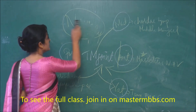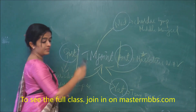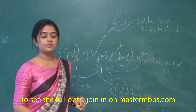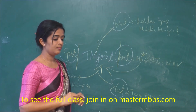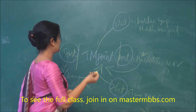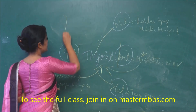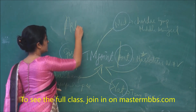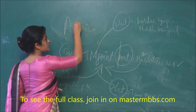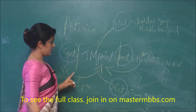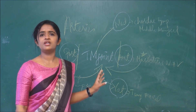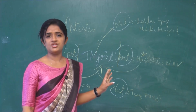Now, regarding the blood supply — the blood supply of the temporomandibular joint — the arteries supplying the temporomandibular joint will be the arteries lying in close relation with the joint. So, which is the artery lying in close relation with the joint?